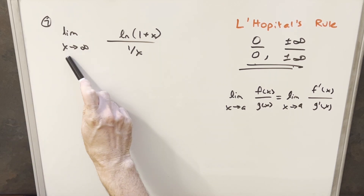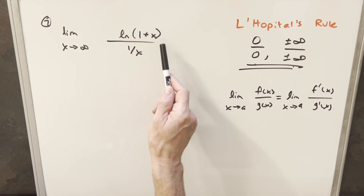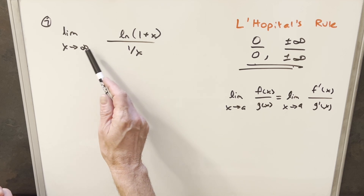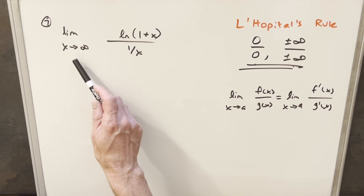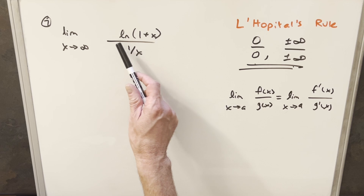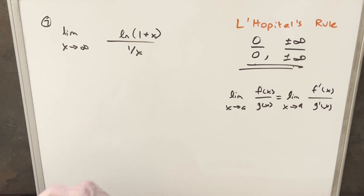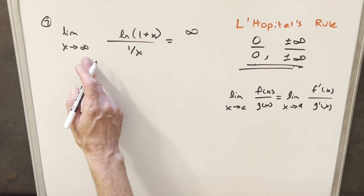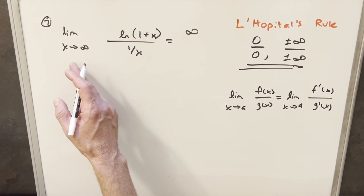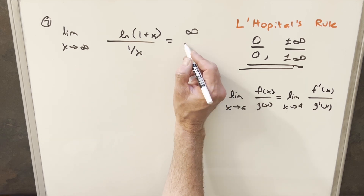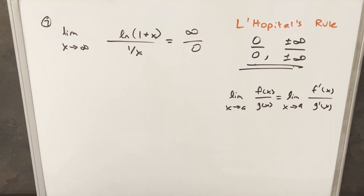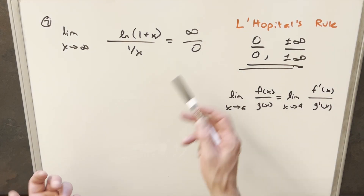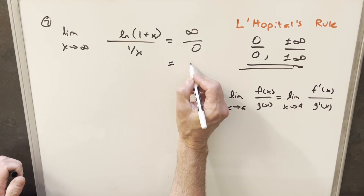Problem 7: the limit as x approaches infinity of natural log of (1 plus x) over 1/x. Checking the numerator at infinity — natural log of infinity is infinity. The denominator, 1/x as x approaches infinity, goes to 0. So we have infinity over 0, which is not an indeterminate form. This is not a case for L'Hôpital's Rule, and the limit is going to infinity.